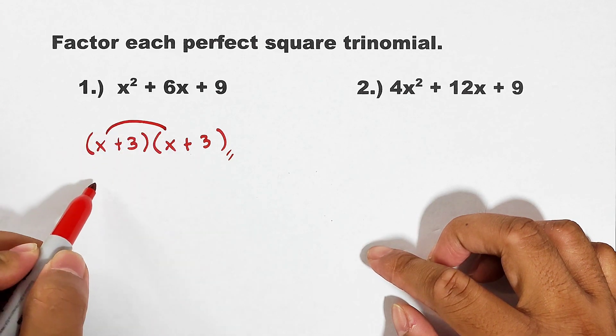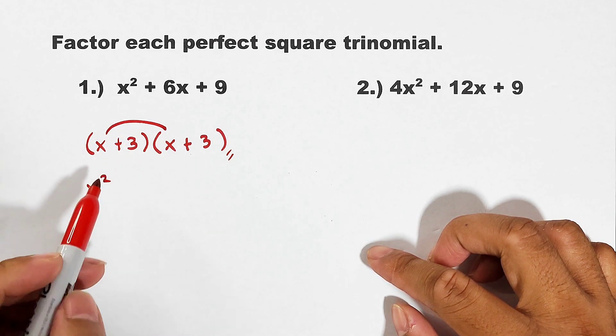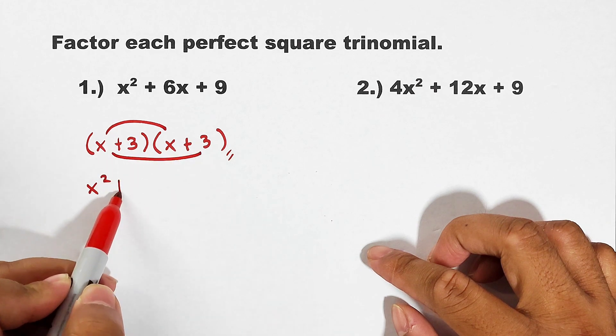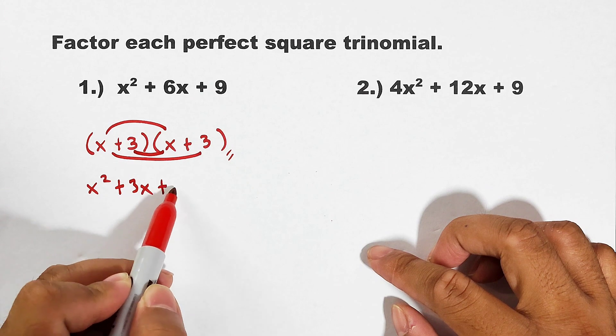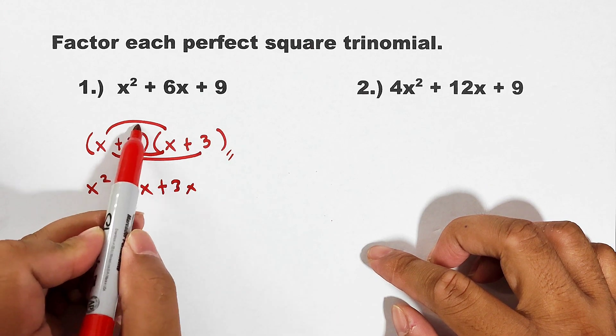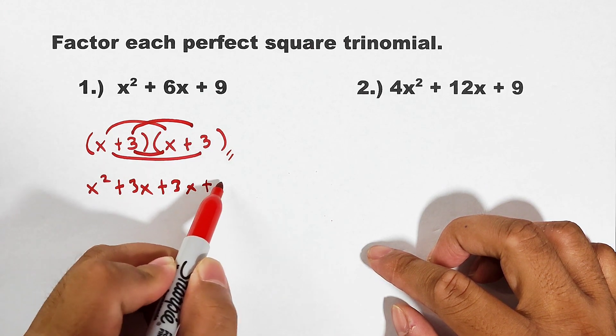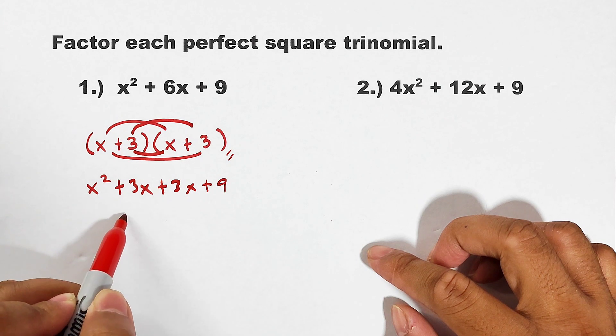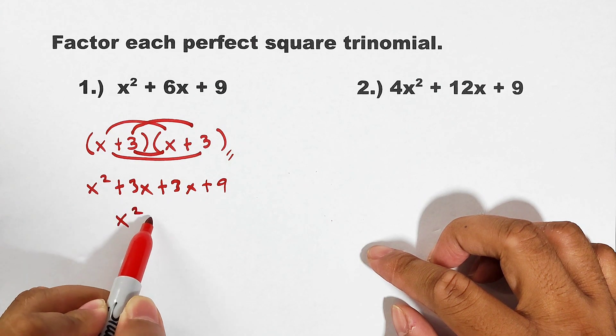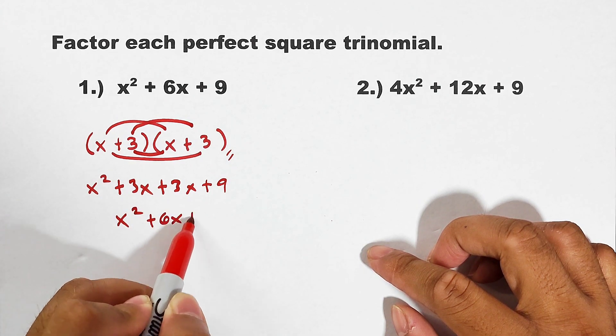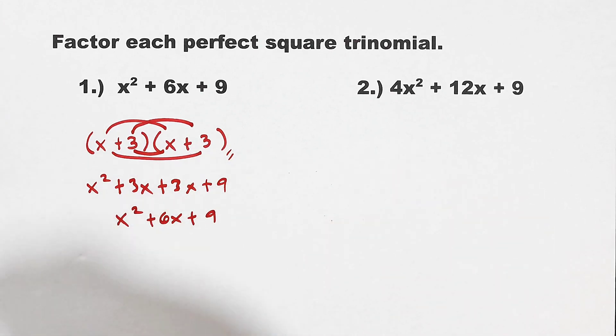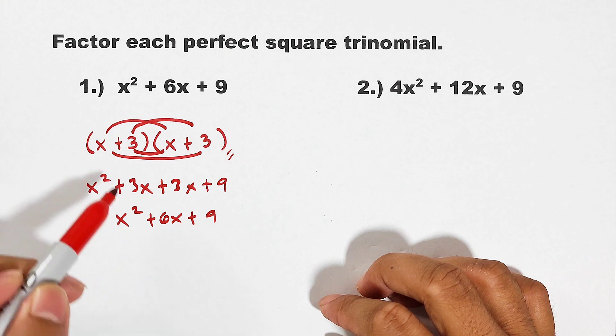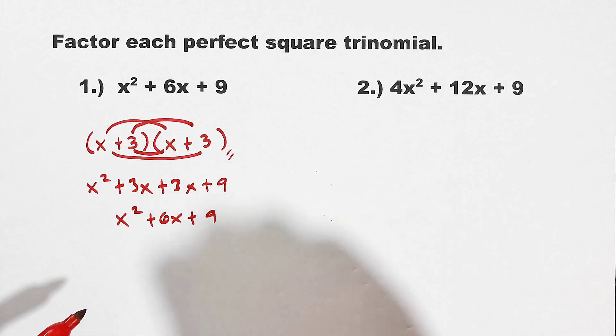x times x is x². 3 times x plus 3 times x is plus 6x. 3 times 3 is plus 9. And when you simplify it, that is x² + 6x + 9. As you can see, we can arrive to the same trinomial at the top.